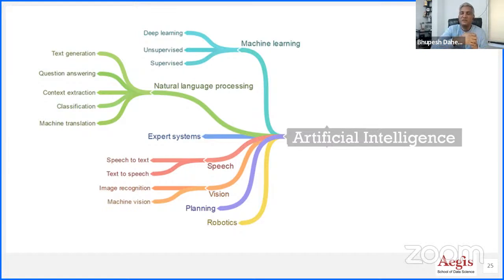Today's AI technologies are essentially around machine learning, natural language processing, and some vision and robotics — but these are very specialized narrow AI. We still haven't reached the level of building general intelligence AI, but the way progress is happening, I think in another 10 to 15 years we should be able to reach that level.